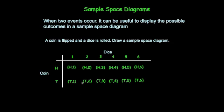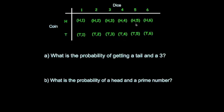Let's have some questions based upon this. So here we've got the same diagram and it says find the probability of getting a tail and a 3. So altogether there's 12 possible outcomes. And a tail and a 3, well there's only one possible outcome for that. So it's going to be 1 out of 12.